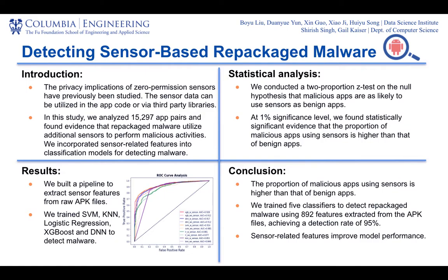We added sensor features to improve the detection performance of malware classifiers. As an initial evaluation of using sensor-related features to distinguish between malware and benign apps, we conducted a two-proportion z-test on the null hypothesis that malwares are as likely to use sensors as benign apps. At 1% significance level, we found statistically significant evidence that the proportion of malicious apps using sensors is higher than benign apps.